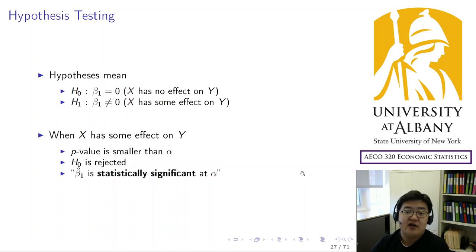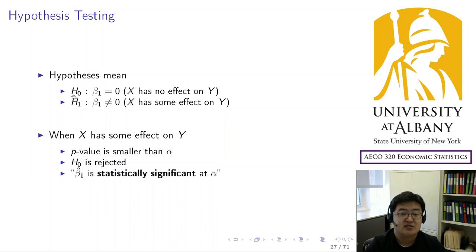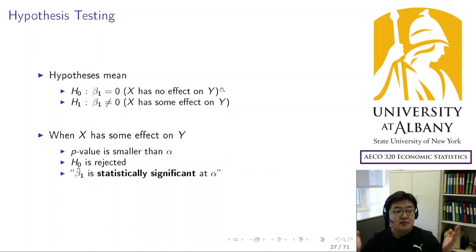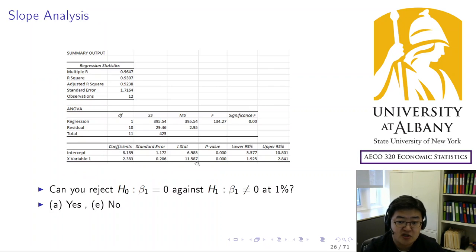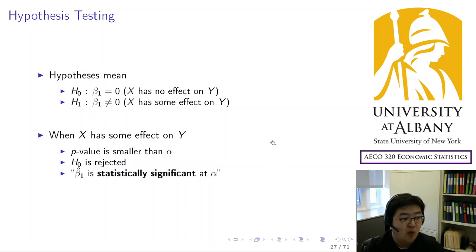Rejecting is actually good news, because the null hypothesis is a negative result — it means the model is not relevant. The null hypothesis that β₀ = β₁ = 0 means x has no effect on y, and the regression model has no prediction power. So you want to reject the null hypothesis; you want the p-value to be small. If the p-value is large, the regression model has no prediction power and the results are useless.